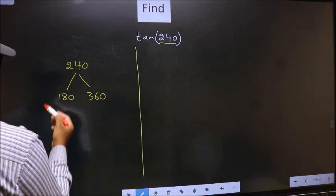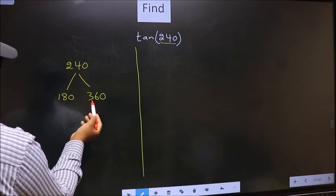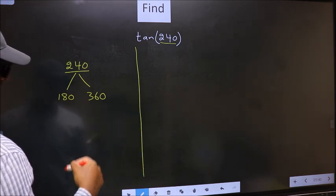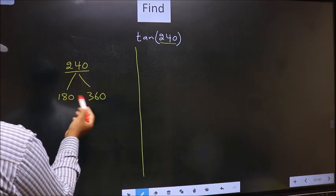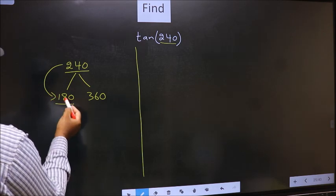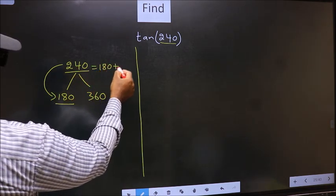This is 180 × 1 and this is 180 × 2. Between these two numbers, 240 lies. Next, 240 is close to which number? This is close to 180. So, in place of this, we should write 180 plus 60.